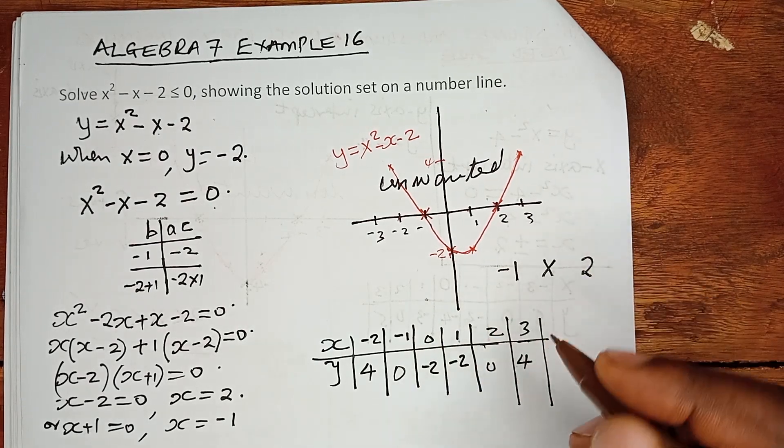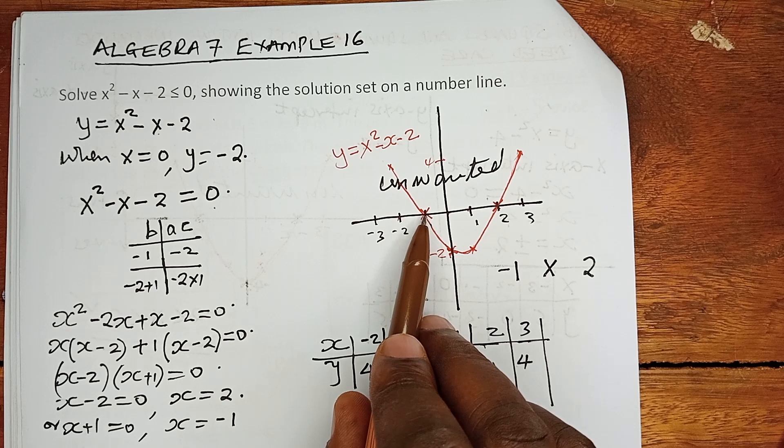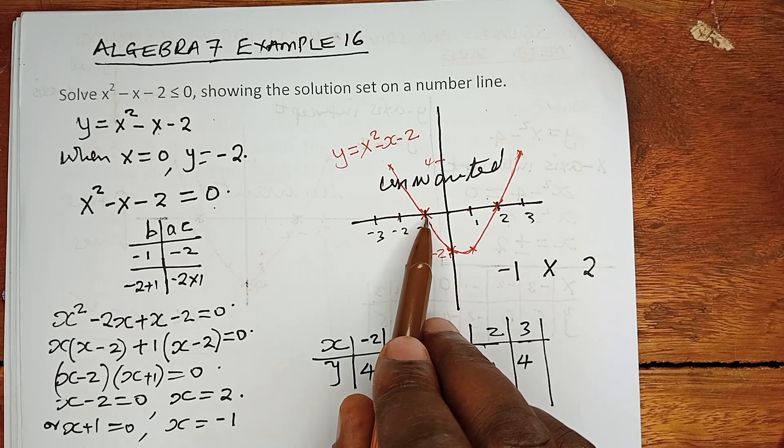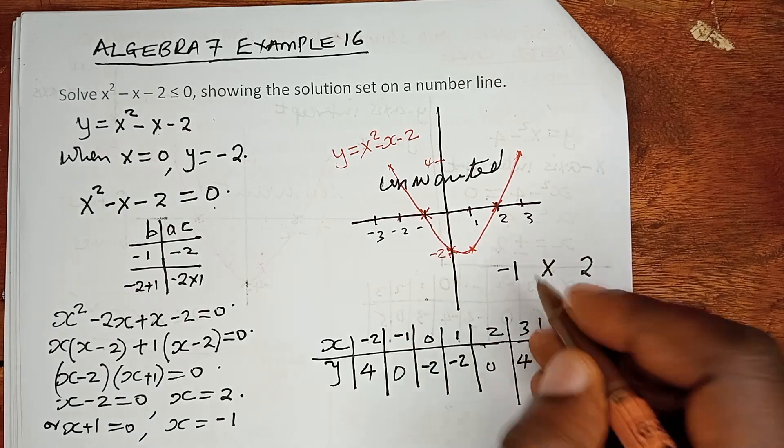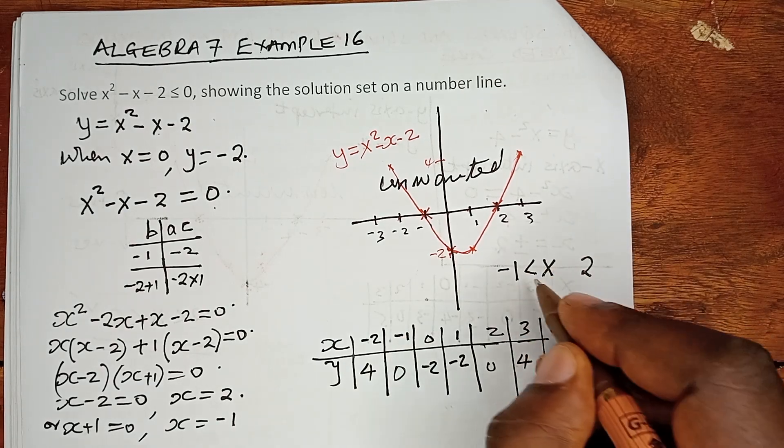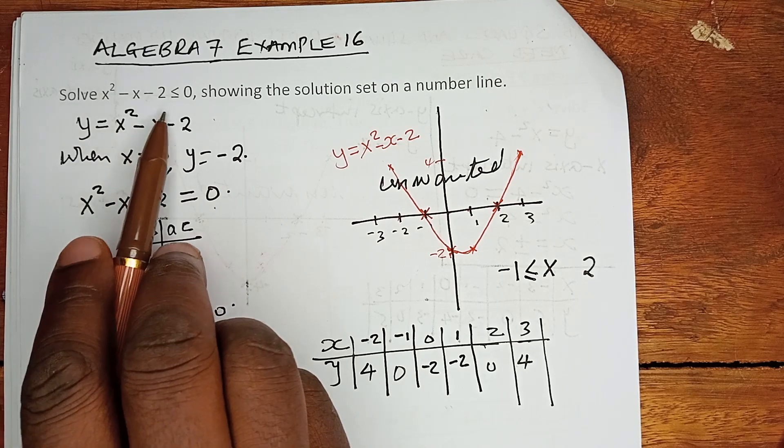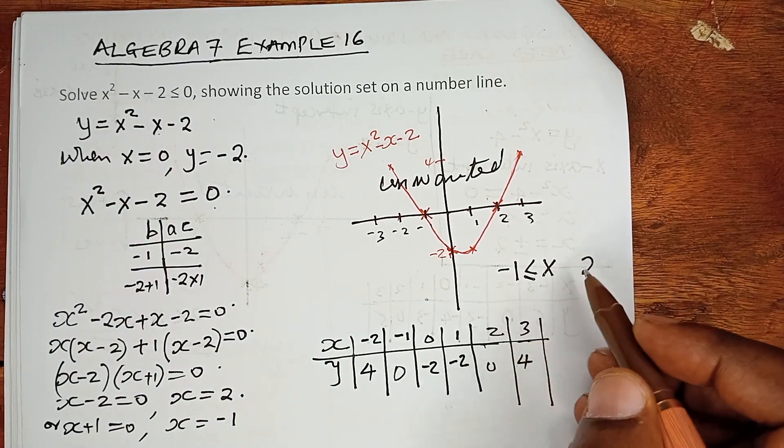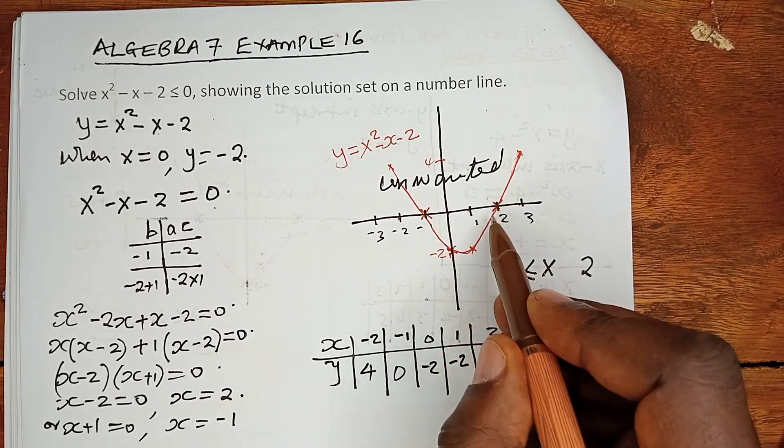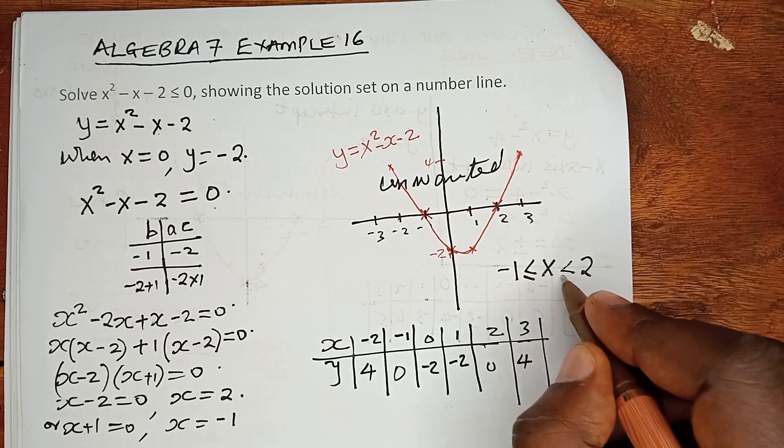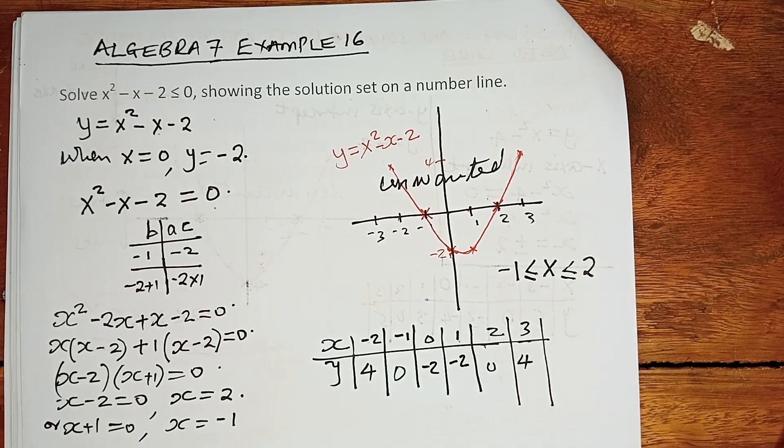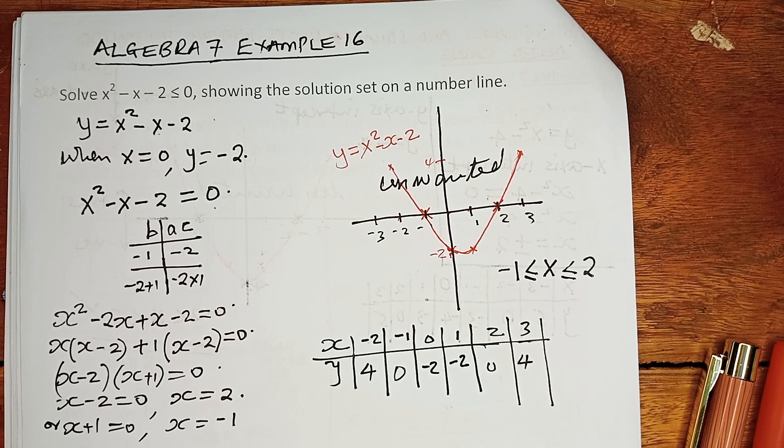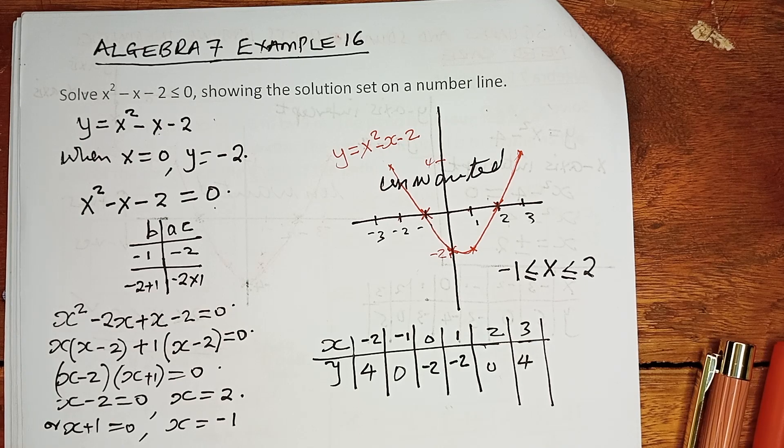And the line is continuous. x has to be in between. For all values of x greater than negative 1, moving to the right, greater than negative 1 or equals to, because our inequality provides equals to. And for all values of x which are less than 2, less than or equals to. Then within this region, this makes a lot of sense.